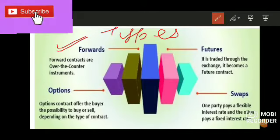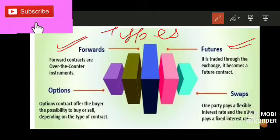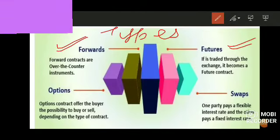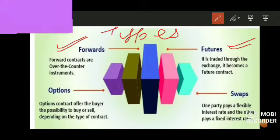On the other hand, futures are traded through an exchange. In a futures contract, the agreement between two parties happens now on specific terms and conditions, but the transaction takes place at a future date based on the value prevalent at that time — not a pre-decided fixed rate.